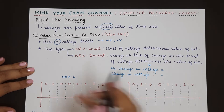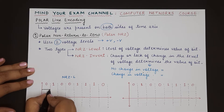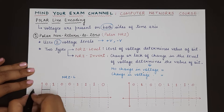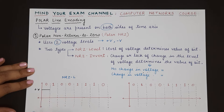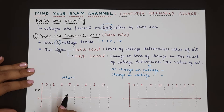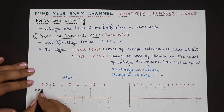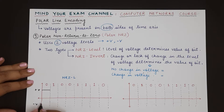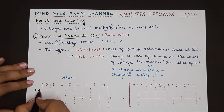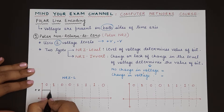In NRZ-L, if the level of the voltage is high, it represents 0. If the level of the voltage is low — that means negative V — it represents bit 1. You can select either convention, but generally plus voltage is taken to represent 0 in NRZ-L and minus V is taken to represent bit 1. So if the sender has to send data 0, 1, 0, 0, 1, 1, 0, he will first use a positive voltage level to represent 0.